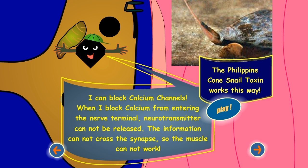I can block calcium channels. When I block calcium from entering the nerve terminal, neurotransmitter cannot be released. The information cannot cross the synapse, so the muscle cannot work.